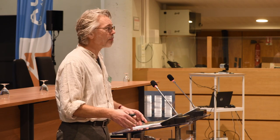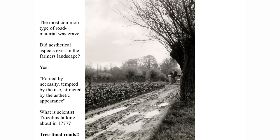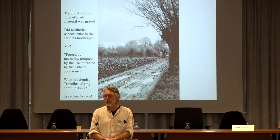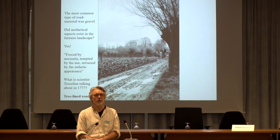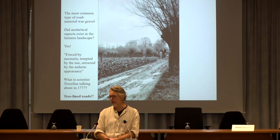But what about the farmer's landscape — did avenues exist there and how were they considered? To begin with, one must realize that the most common type of road material was gravel. So did aesthetical aspects really exist in this landscape? The sources say yes. The county governors, scientists, etc. talk about this landscape. One fun quote is by Trothelius, a person very involved in trees. He says: 'forced by necessity, tempted by the use, and attracted by the aesthetic appearance.' He's talking about the roads which the farmers had to maintain and wanted planted with trees.